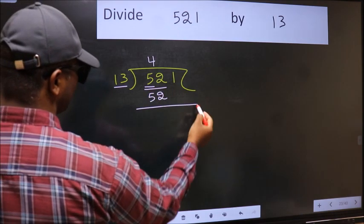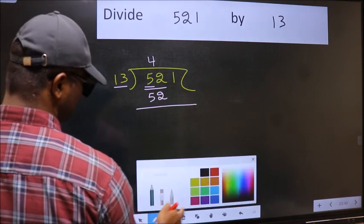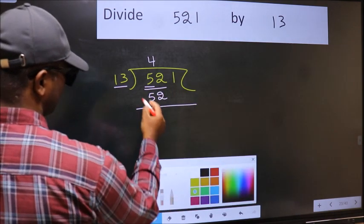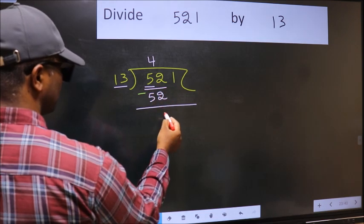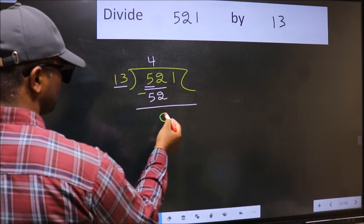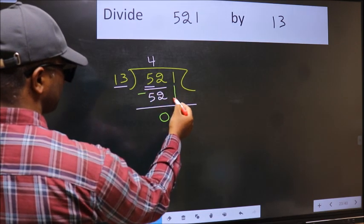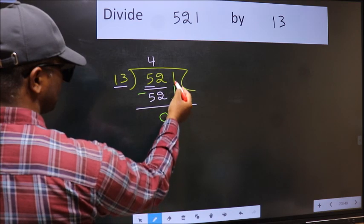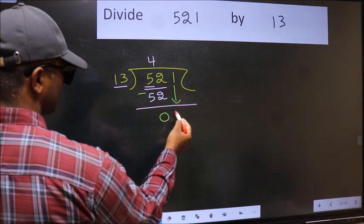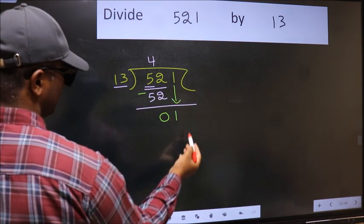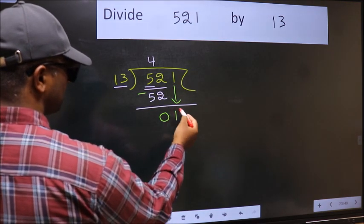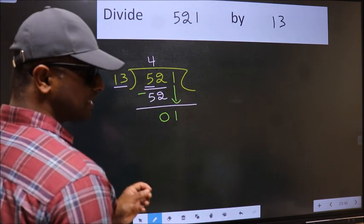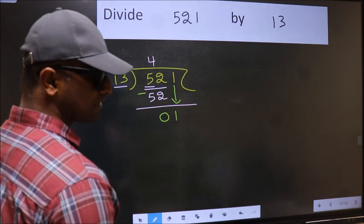Now we should subtract. 52 minus 52 is 0. After this, bring down the beside number. So 1 comes down. After this step, the mistake happens.